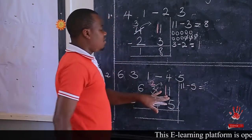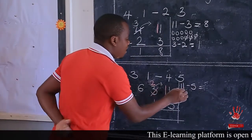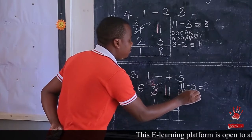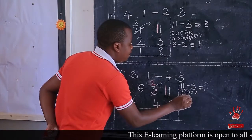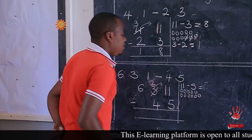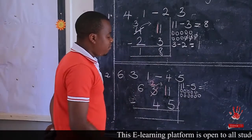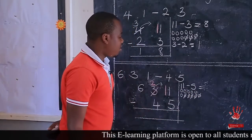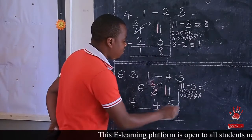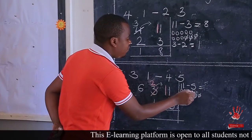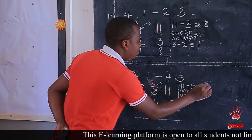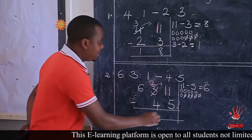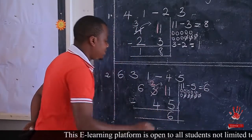What is 11 take away 5? You draw one through eleven, then remove five: one, two, three, four, five. What do I remain with? One, two, three, four, five, six. So 11 take away 5 is 6. I come and write 6 here. I go to the next number.